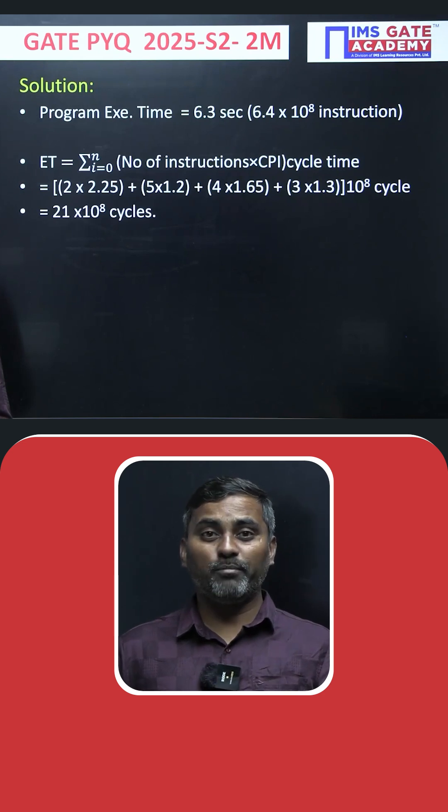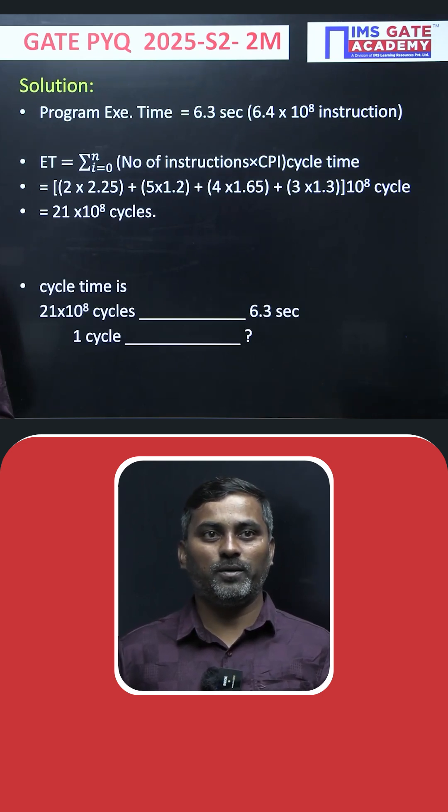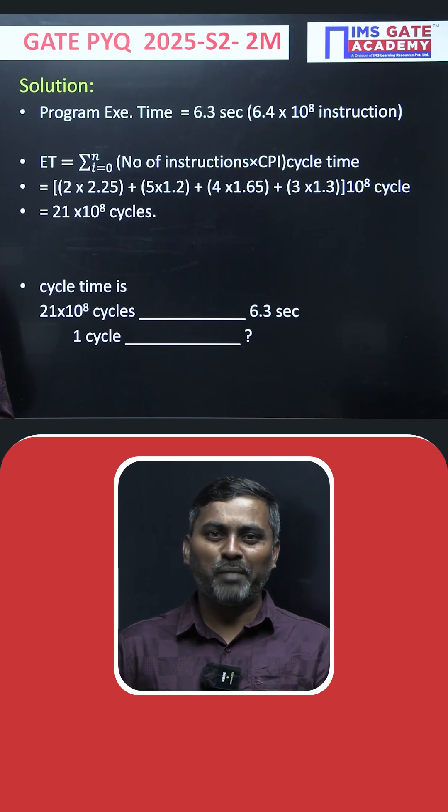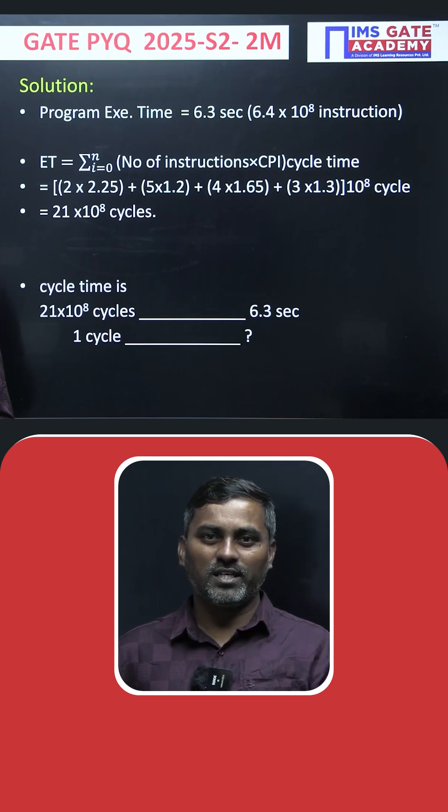21 × 10^8 clock cycles were taken by this program, which took 6.3 seconds. We need to calculate cycle time. If 21 × 10^8 clock cycles run in 6.3 seconds, what is one clock cycle time? This is a basic unitary method question.